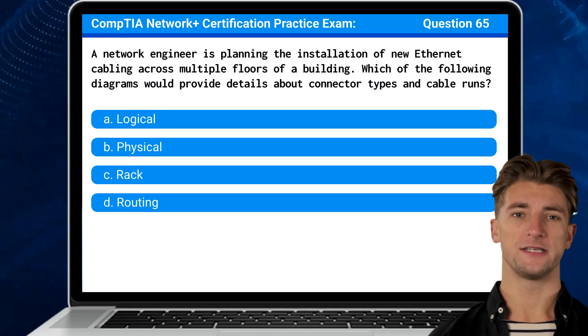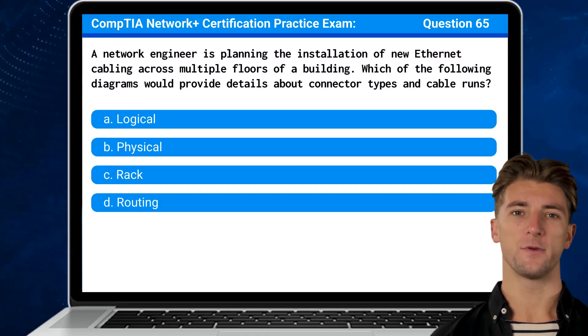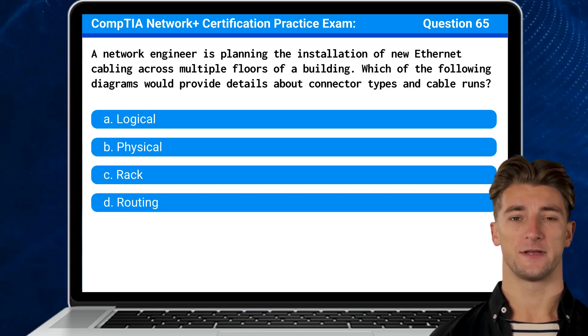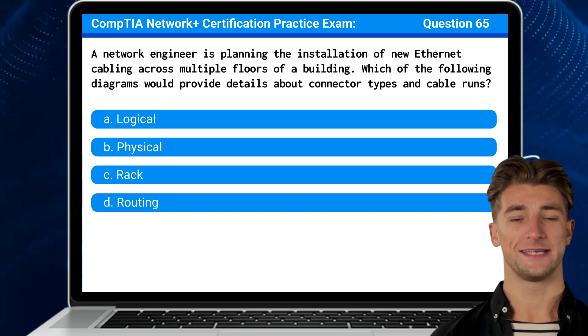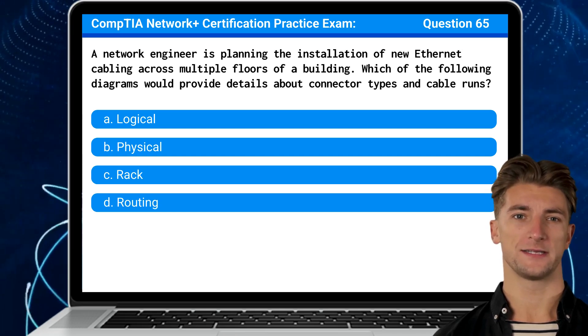Question 65. A network engineer is planning the installation of new Ethernet cabling across multiple floors of a building. Which of the following diagrams would provide details about connector types and cable runs?